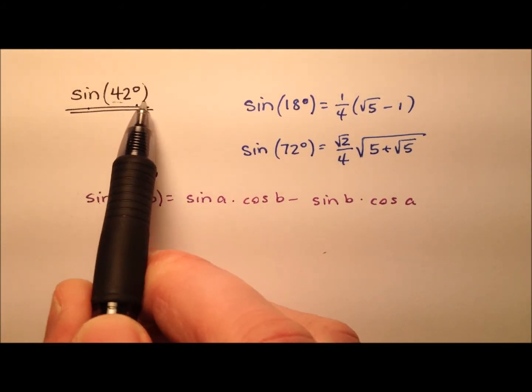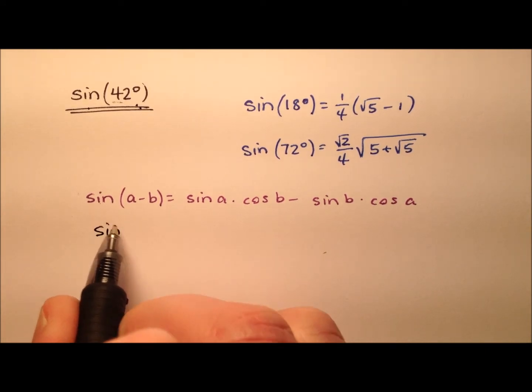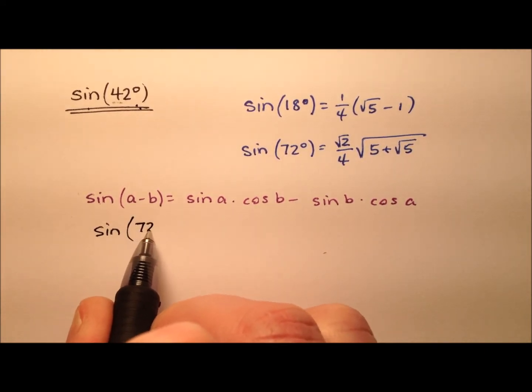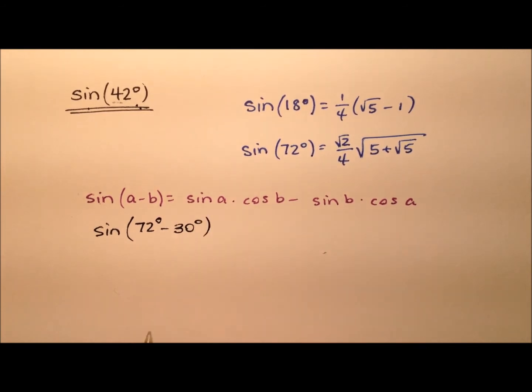And so to make 42 degrees, let's go ahead and break this down, and we'll say it's going to be 72 degrees minus 30 degrees.